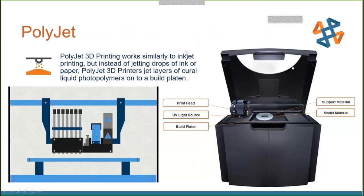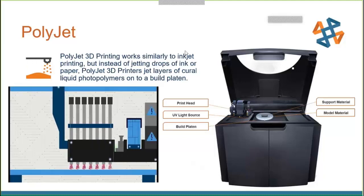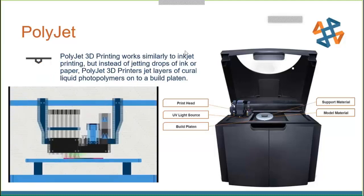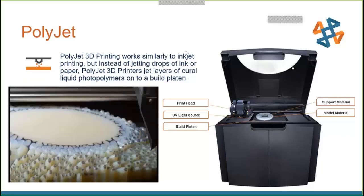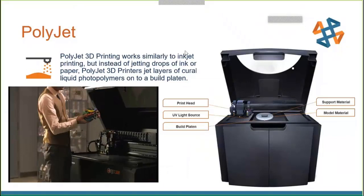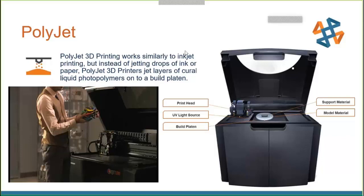PolyJet technology is an inkjet printer — it works very much like your inkjet print head at home. The difference is you have a Z axis, so as you print and drop your material, you can build it layer upon layer. It uses a UV light to cure the material — it's a photopolymer, a UV ink cured layer by layer as the head passes.